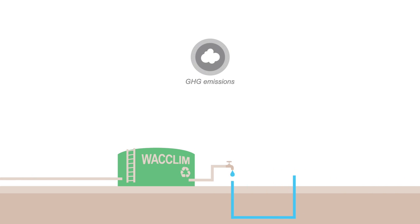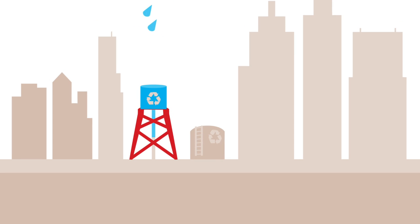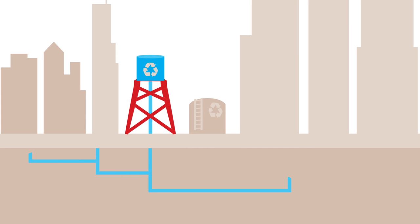We can reduce the carbon footprint by reusing treated wastewater and recycling nutrients. At the same time, we adapt to climate change by making better use of our resources, like reducing water losses and reusing water.